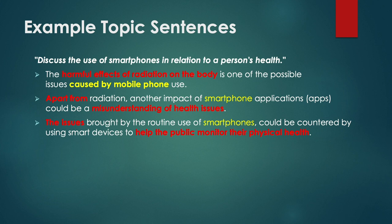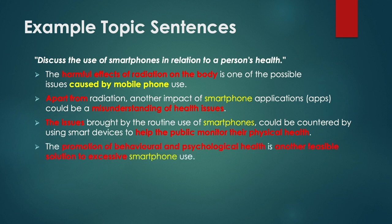The words 'brought by the routine use of smartphones' links back to the question again, and 'smart devices to help the public monitor their physical health' means the content will be about checking your health using a smartphone. The fourth body paragraph has 'another feasible solution,' so we know it's another solution paragraph. 'The promotion of behavioral and psychological health is another feasible solution to excessive smartphone use' — it's about a push factor to encourage healthy living. These are all effective topic sentences and good models to follow.